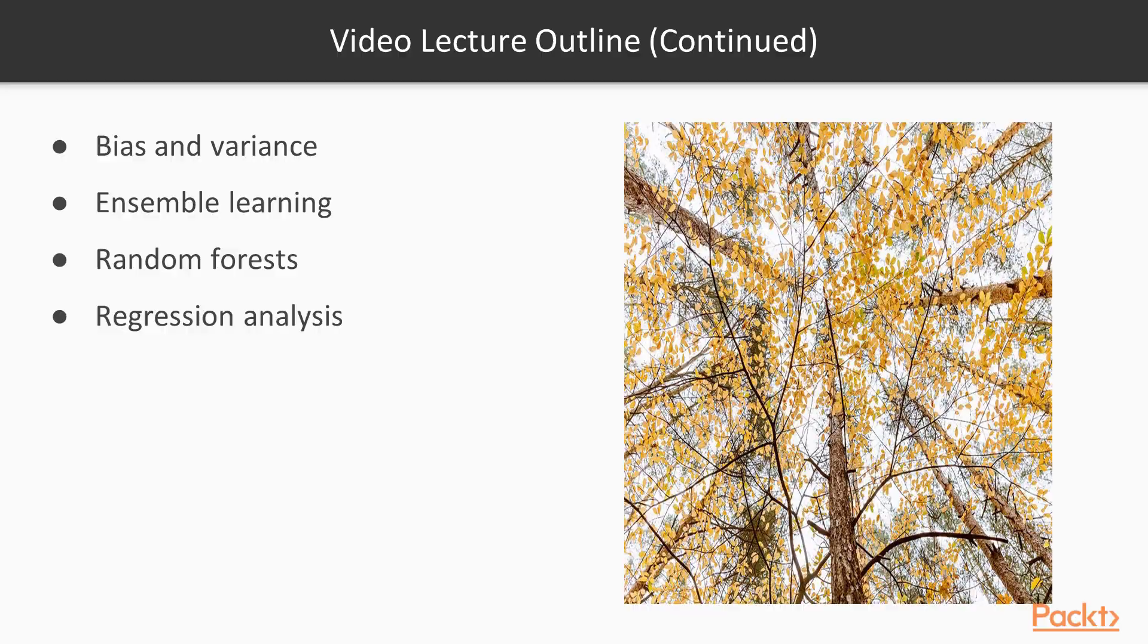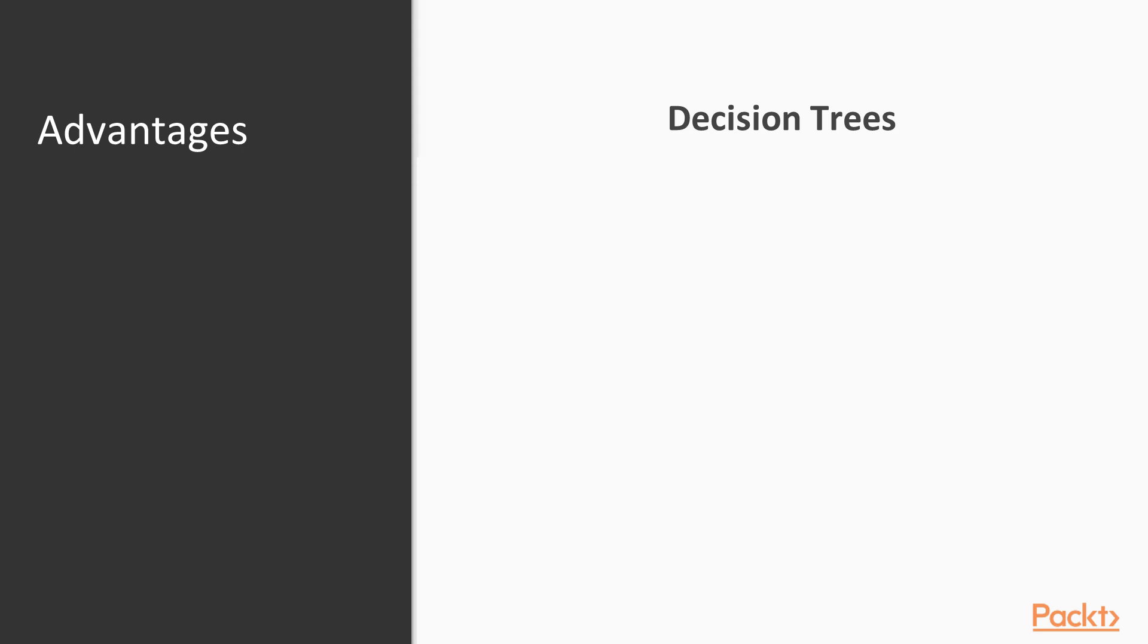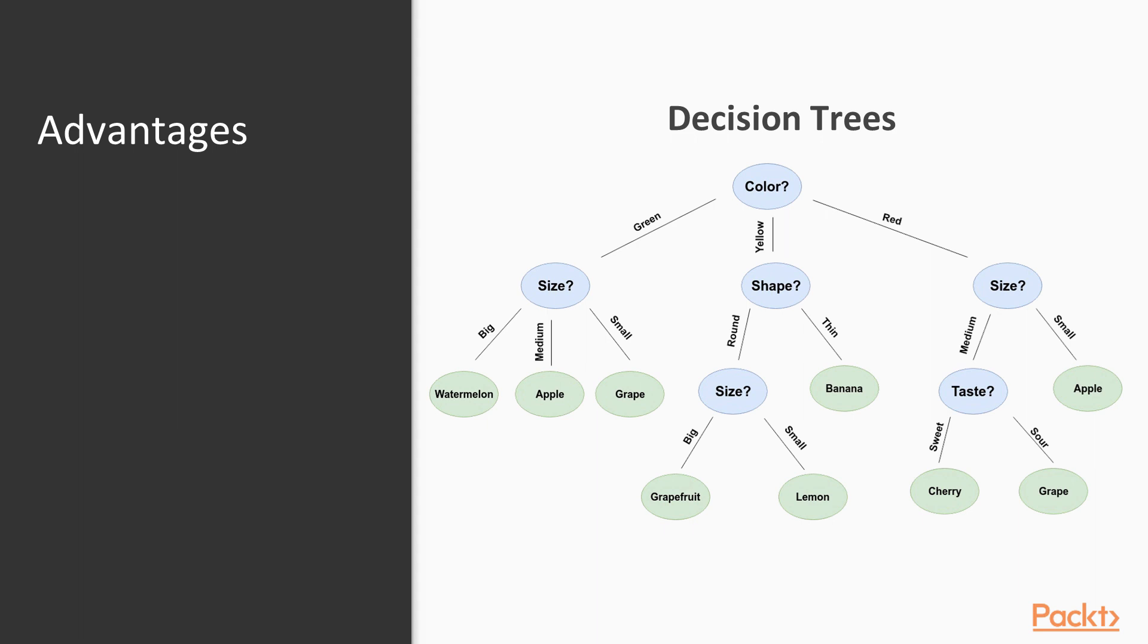Let's start with decision trees. The decision tree is a classic tool for rule-based inference. For example, the tree we have on the screen models a fruit classifier. It begins by asking the color of the fruit object and based on the answer it branches out to different questions. If the fruit object is green, it asks again of the object's size. If it's a large green fruit object, then it's more likely to be a watermelon.